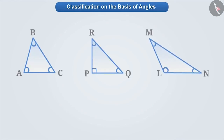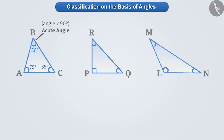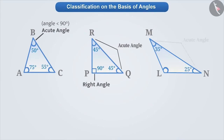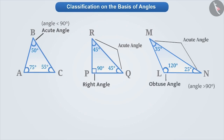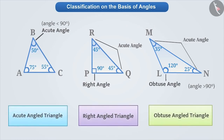Now, let's learn how to classify triangles on the basis of angles. Here, three triangles are given. Can you find any difference by looking at their angles? If we look at triangle ABC, then all its angles are acute angles. If we look at triangle PQR, then it has two acute angles but one right angle. Similarly, in triangle LMN, we can see that there are two acute angles but one obtuse angle. With this understanding, we can classify the triangles in the following ways.